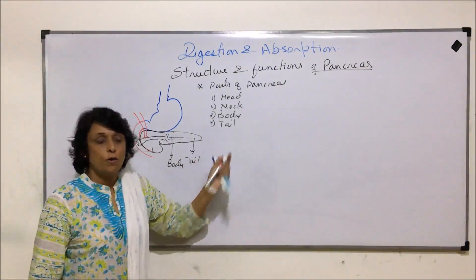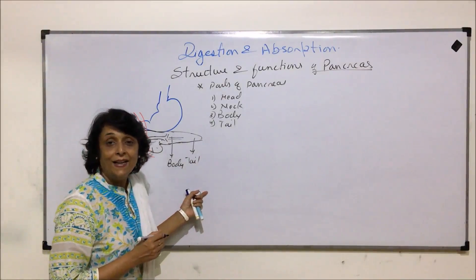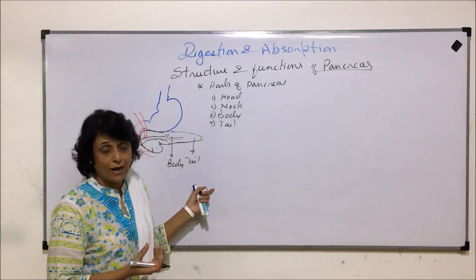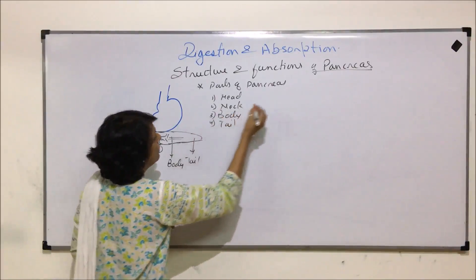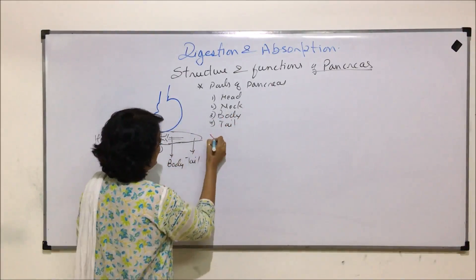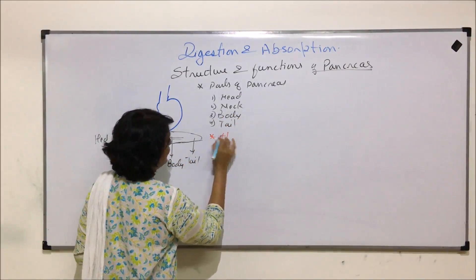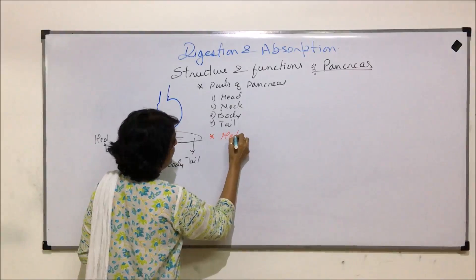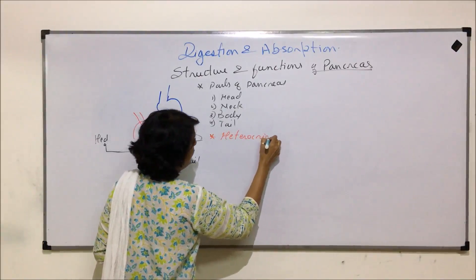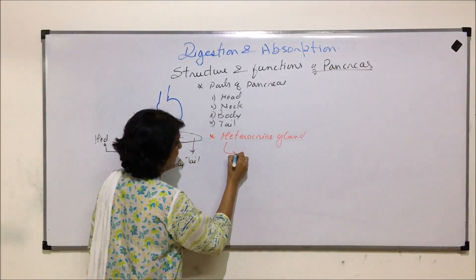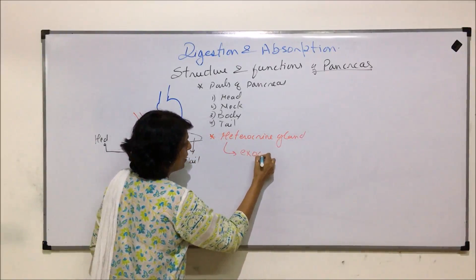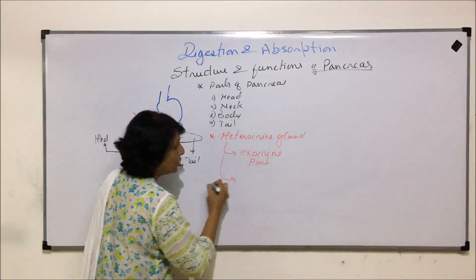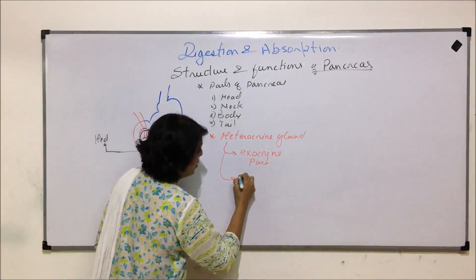There are four parts. The pancreas has both endocrine and exocrine cells, so the pancreas is described as a heterocrine gland. A heterocrine gland means it has both an exocrine part and an endocrine part.